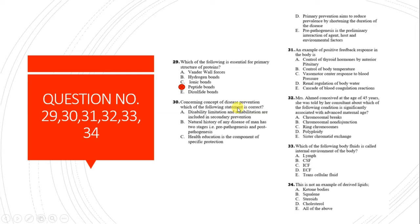Question 30: Regarding the concept of disease prevention, the correct statement is E - prepathogenesis involves the preliminary interaction of agent, host, and environmental factors. This is from community medicine.